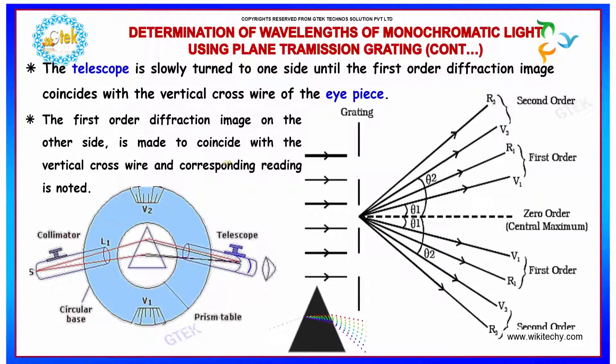The telescope is slowly turned to one side until the first order diffraction image coincides with the vertical cross wire of the eyepiece, and the first order diffraction on the other side is made to coincide with the vertical cross wire and the corresponding reading is noted.